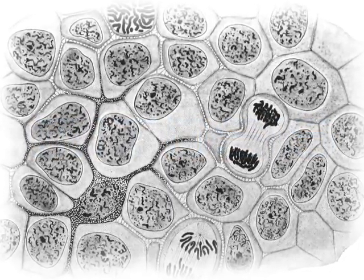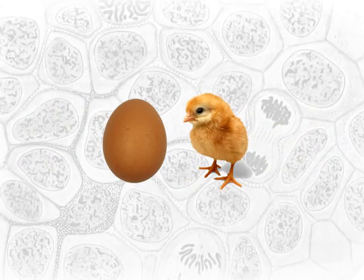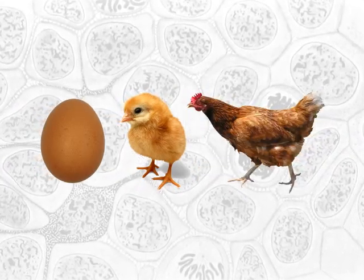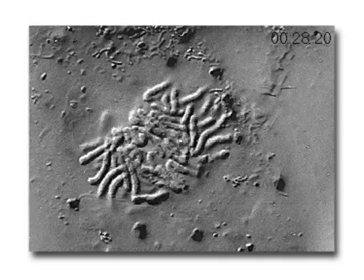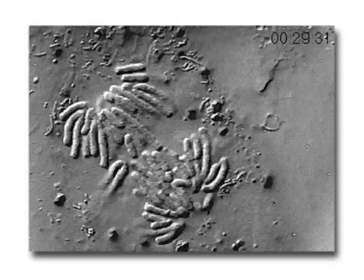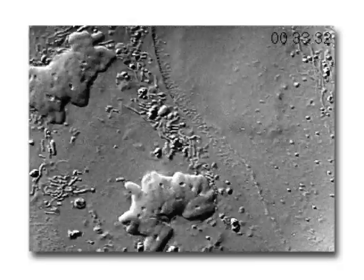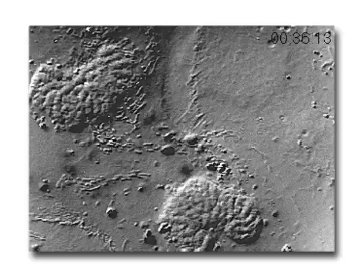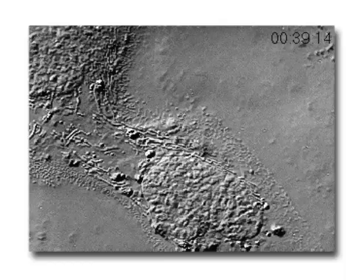Cell division is required for an organism to grow, mature, and maintain tissues. During the mitotic phase, a cell will undergo mitosis to form two new nuclei, and then divide to form two new individual cells during cytokinesis.